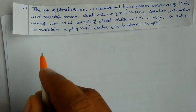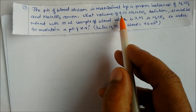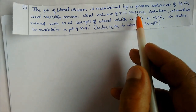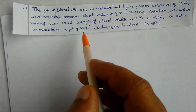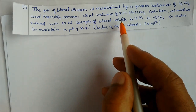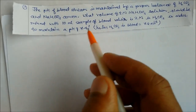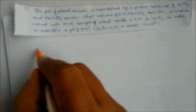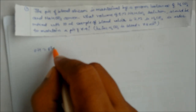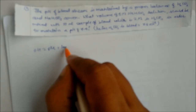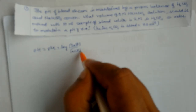We have to find the volume of 5 molarity sodium bicarbonate such that pH will be 7.4. The pH and pKa are given, but volume is what we need to find. We use the Henderson equation: pH = pKa + log([salt]/[acid]).